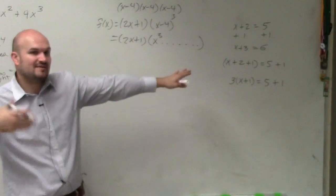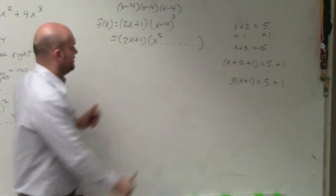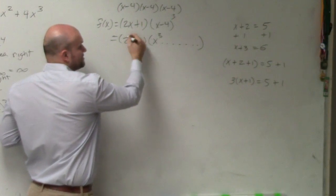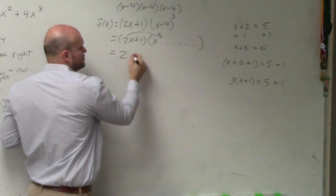And remember, we're trying to find the end behavior. So we're only concerned about our highest power, which is our degree. Then, if I was to multiply these using FOIL, first thing you do is multiply the first two terms, which gives you 2x to the fourth.